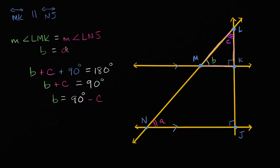Now can we express A in a similar way? If we look carefully, we see that we have triangle NLJ — this really big triangle that is most of the diagram. What's interesting about triangle NLJ is that it's another right triangle. C is one of the interior angle measures, and A is the measure of another interior angle.